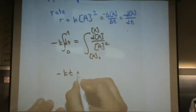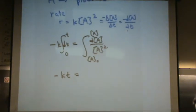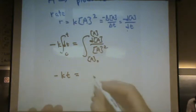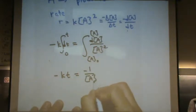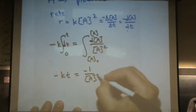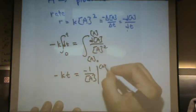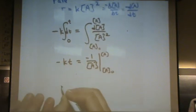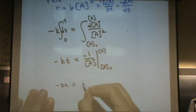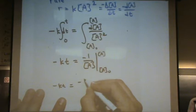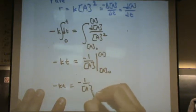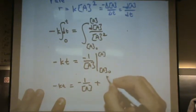Integrate that over time. Again, minus Kt on the left hand side. On the right hand side, what's the integration of 1 over x squared? Non-natural log. Negative whatever it is to the minus 1 power. So, that would be minus 1 over A. Integrated from A to A naught. Or minus Kt equals minus 1 over A plus 1 over A naught.